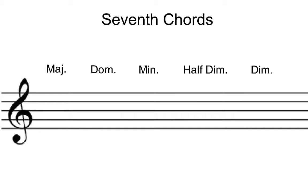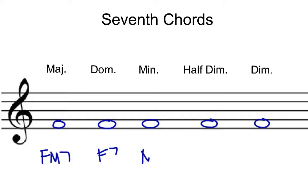I'm going to ask you to spell these chords. I'll give you a root, and I want you to pause the video and on your own manuscript paper try to write the complete 7th chords. All of these are in root position so far — just write them in root position. Let's do everything on a root of F. Write yourself an F major 7, then an F dominant 7, then an F minor 7, then an F half diminished 7, and then an F fully diminished 7. Go ahead and pause the video, write your answers, and when you return I'll fill in the blanks.